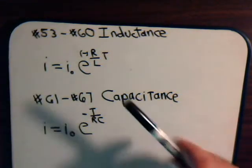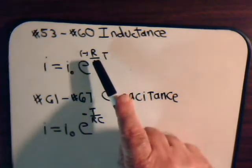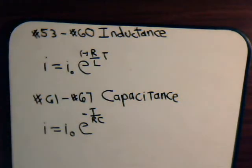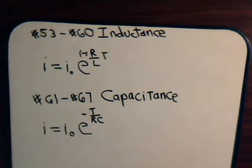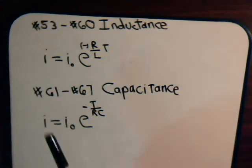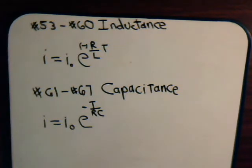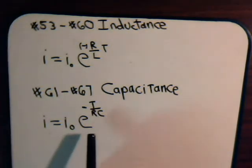We have e to the minus time times R over L. And then for capacitance, videos 61 through 67, one of the equations that we derived was for example the charging current where we have some initial current. We have e to the minus t divided by RC.